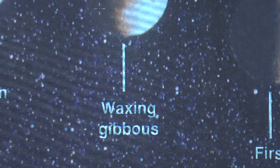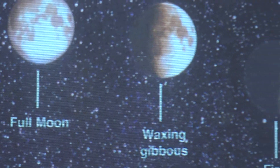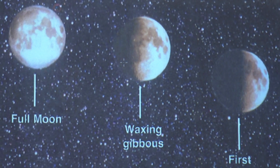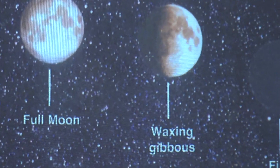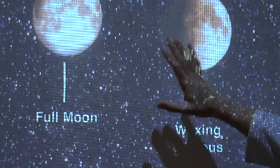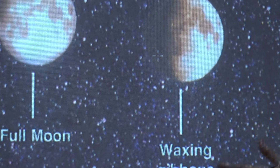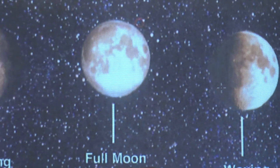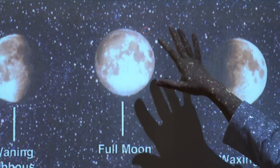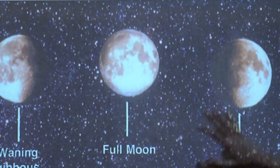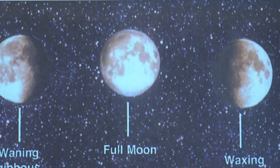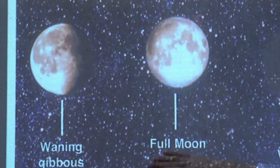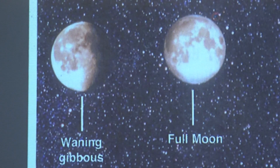First quarter is the phase where we can see only about half of the moon. About two weeks later, we can see the moon completely — all of the moon is lit. This phase is called full moon.